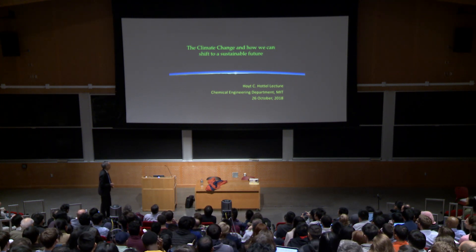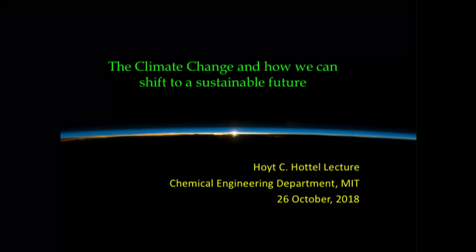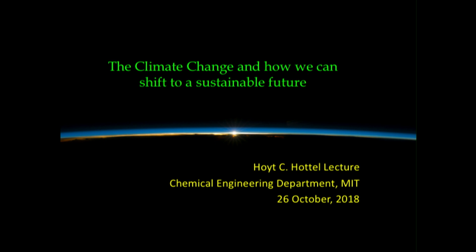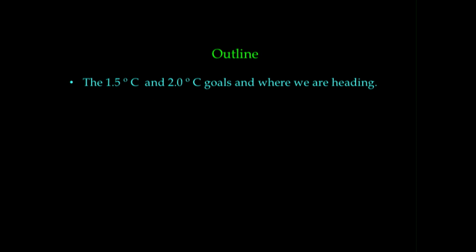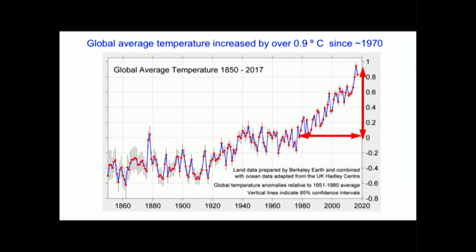What I'd like to talk to you about is something near and dear to my heart — climate change and what we really need to do to shift to a sustainable future. The good news is there are things we can do, and things that are dependent on even further technology development. Let's talk about the one and a half degrees or two degree goals of the UN and also where we're heading. This is the average temperature of the surface of the ocean and land, from 1850 to 2017.